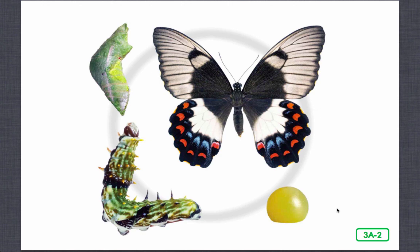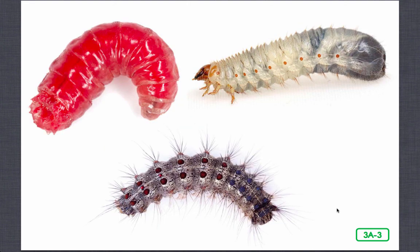The young never resemble their parents and almost always eat something entirely different. The female insect lays her eggs on a host plant. When the eggs hatch, the larvae that emerge look like worms. The word larva is singular and the word larvae is plural. Different names are given to different insects in this worm-like stage. For the butterfly, the larva stage is called a caterpillar. Fly larvae are called maggots, and beetle larvae are called grubs.